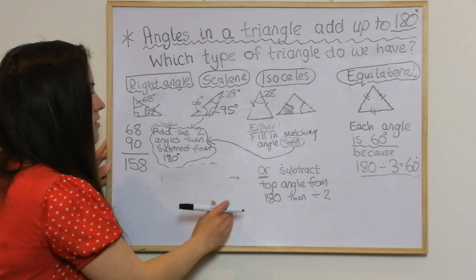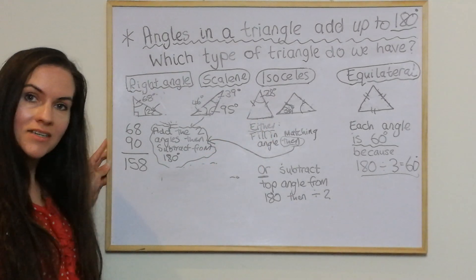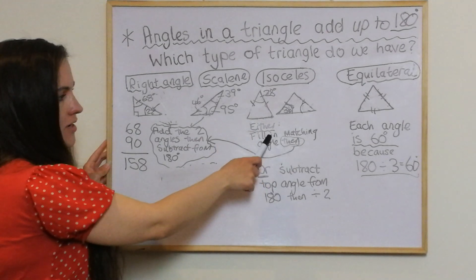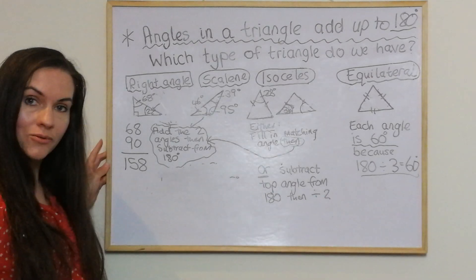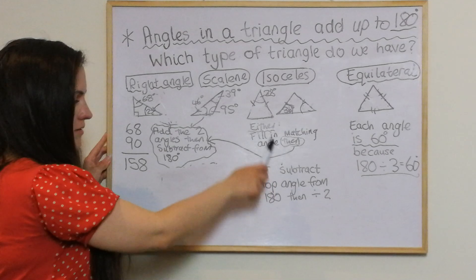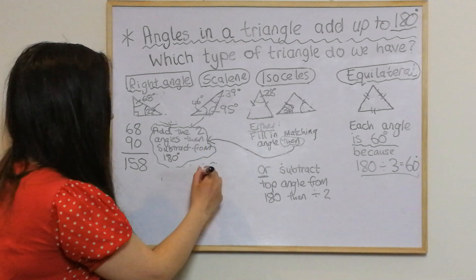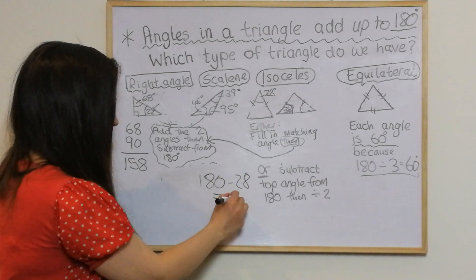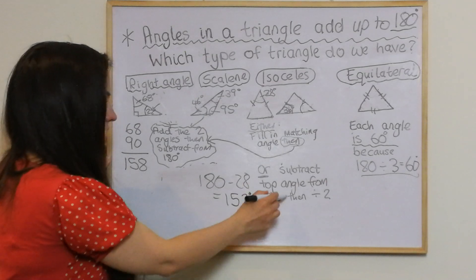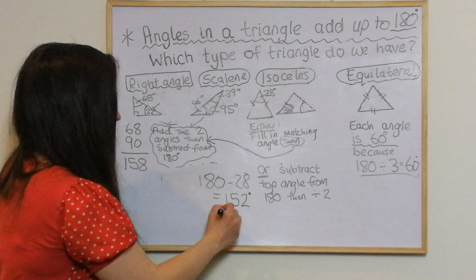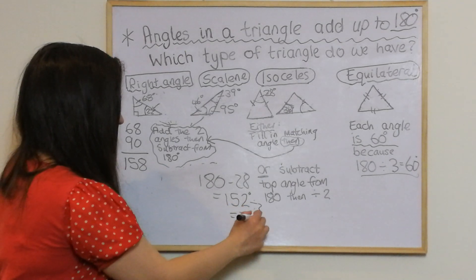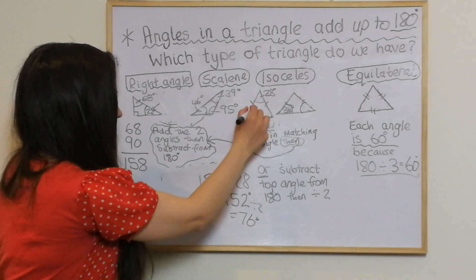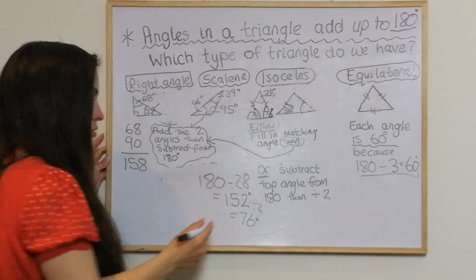Looking at the next one — it's isosceles, and we've got two isosceles triangles here representing the two options. In this one we've got the top angle given, so we subtract the top angle from 180: 180 take away 28 gives me 152. Then I divide that by 2, which gives me 76 degrees. So each of those base angles is 76 degrees. I'll note I'm doing these calculations quickly — it's fine to take your time.